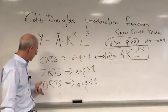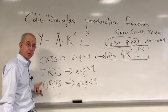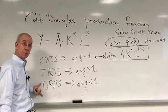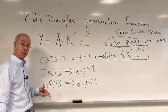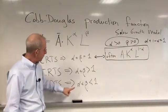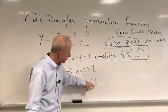And then finally, if you have decreasing returns to scale, as you get bigger, use more inputs, the amount of output falls, then alpha plus beta is going to be less than one.